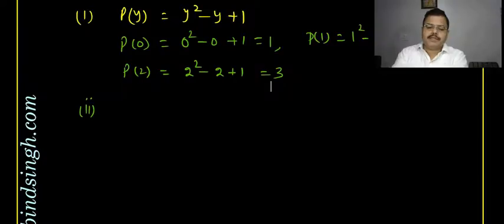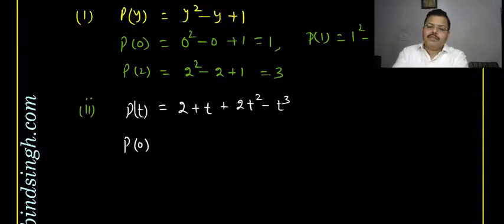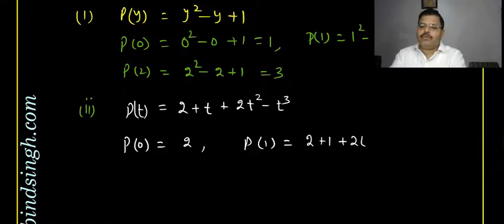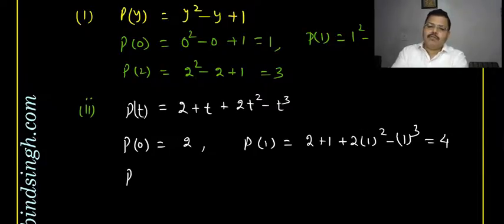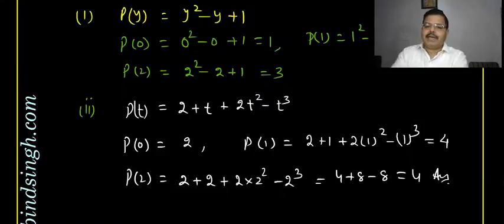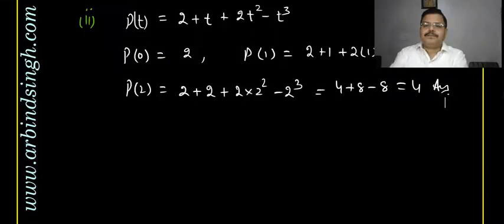Second polynomial: p(t) = 2 + t + 2t² − t³. p(0) = 2 + 0 + 0 − 0 = 2. p(1) = 2 + 1 + 2 − 1 = 4. p(2) = 2 + 2 + 2(4) − 8 = 2 + 2 + 8 − 8 = 4.